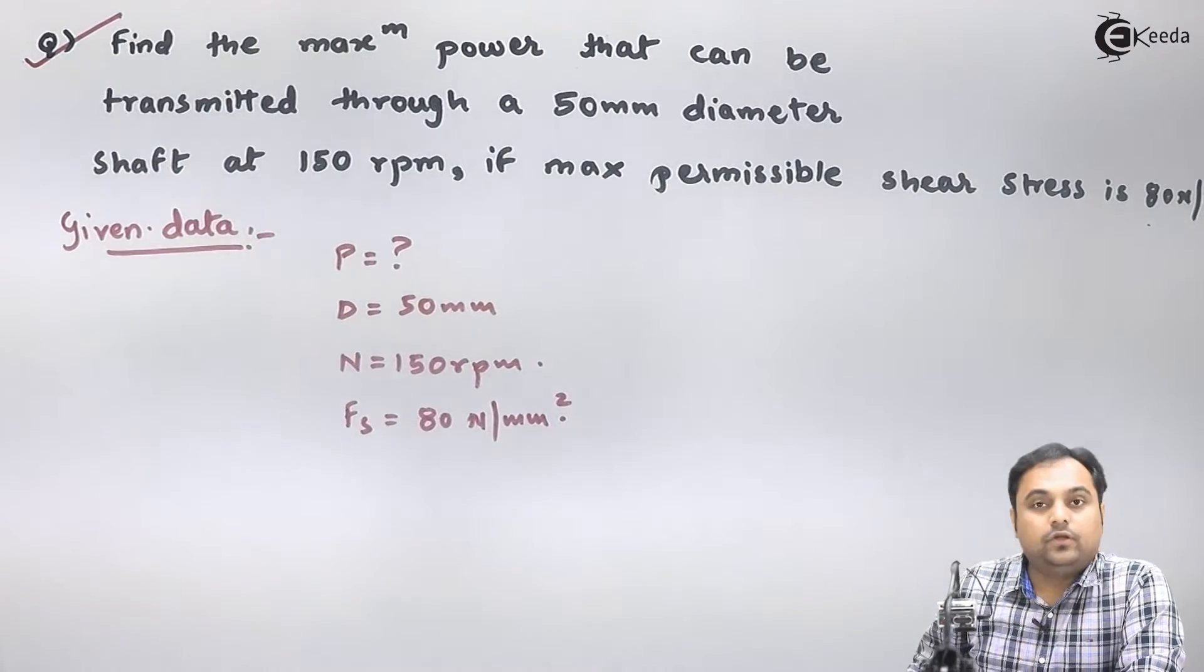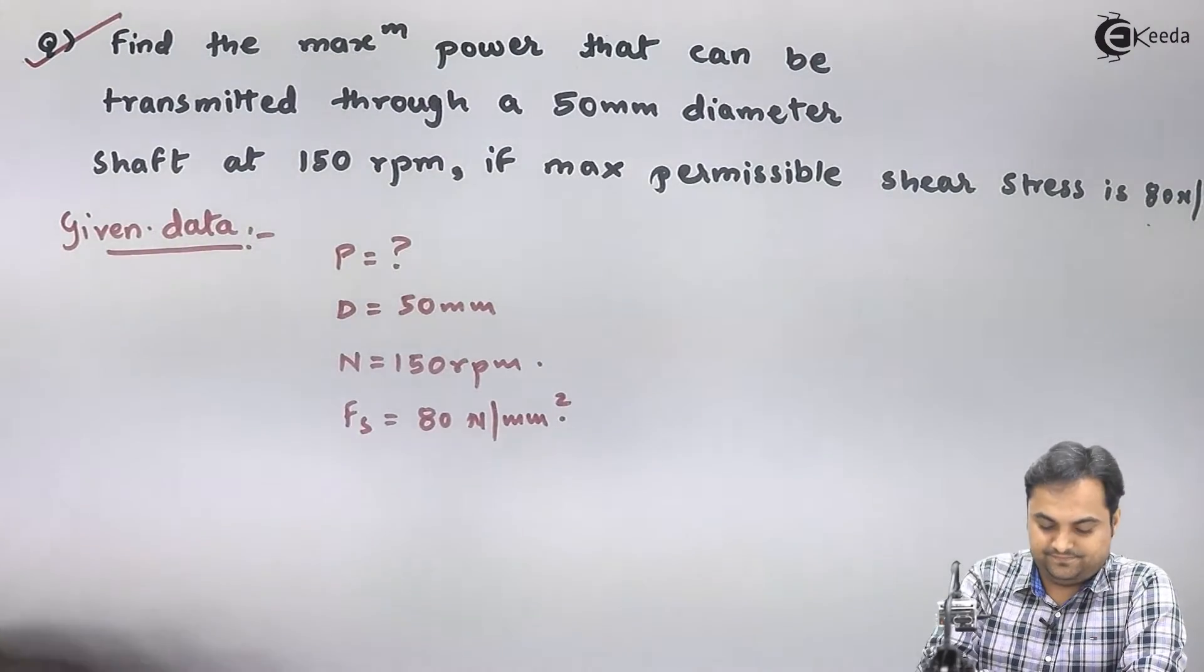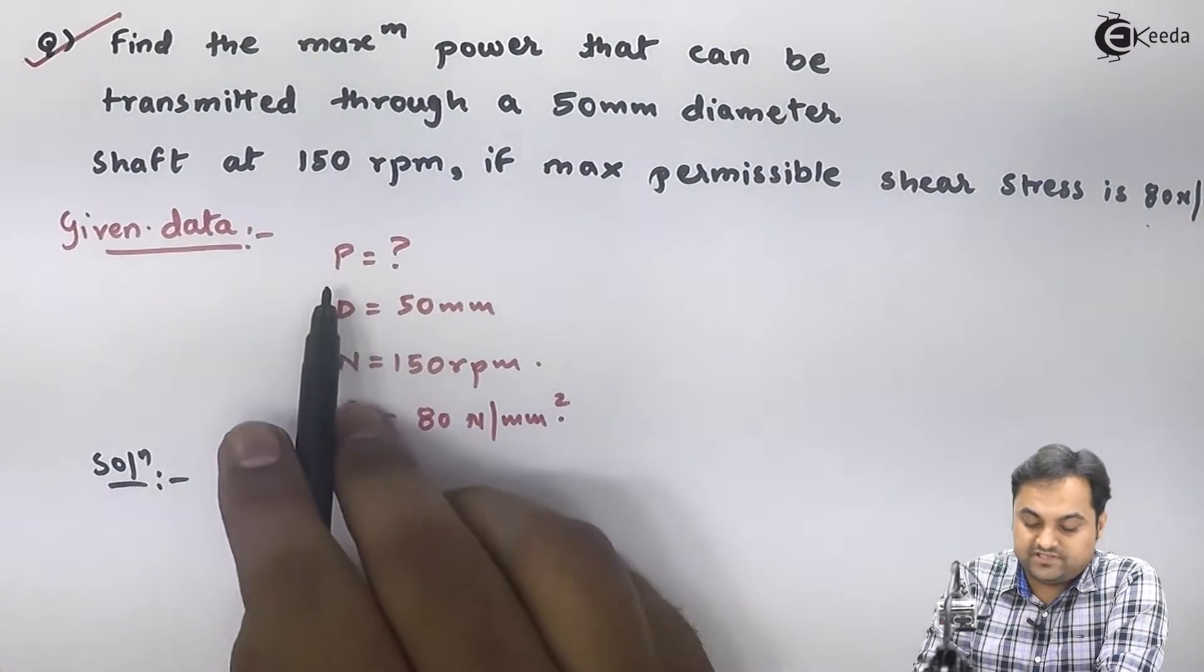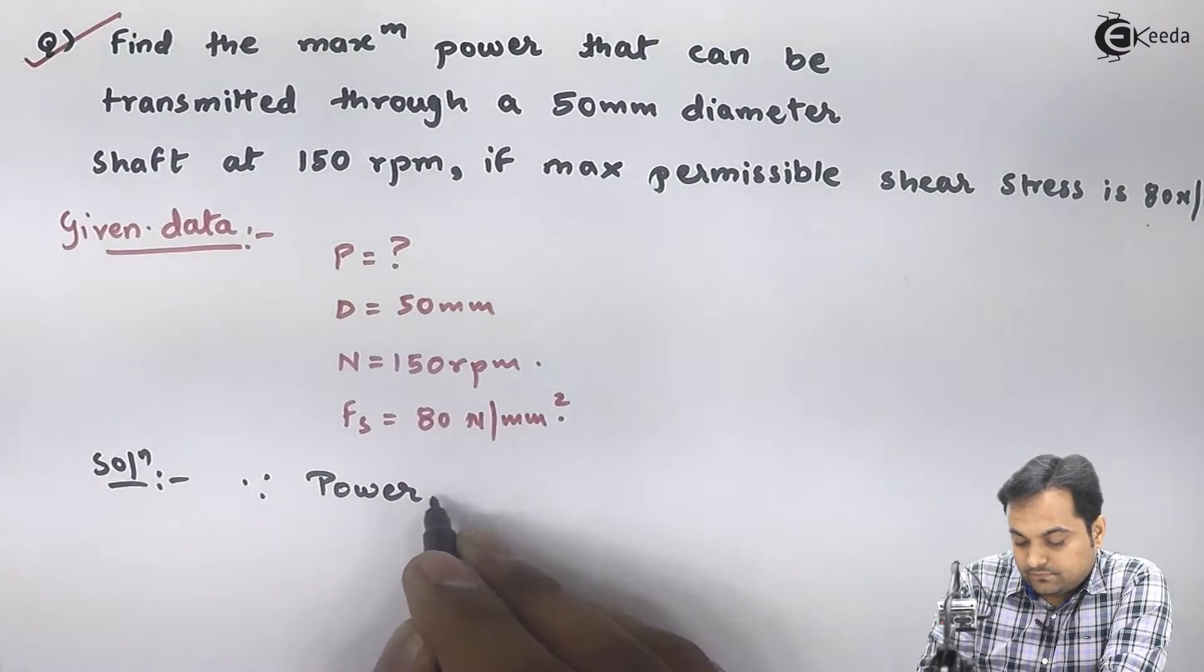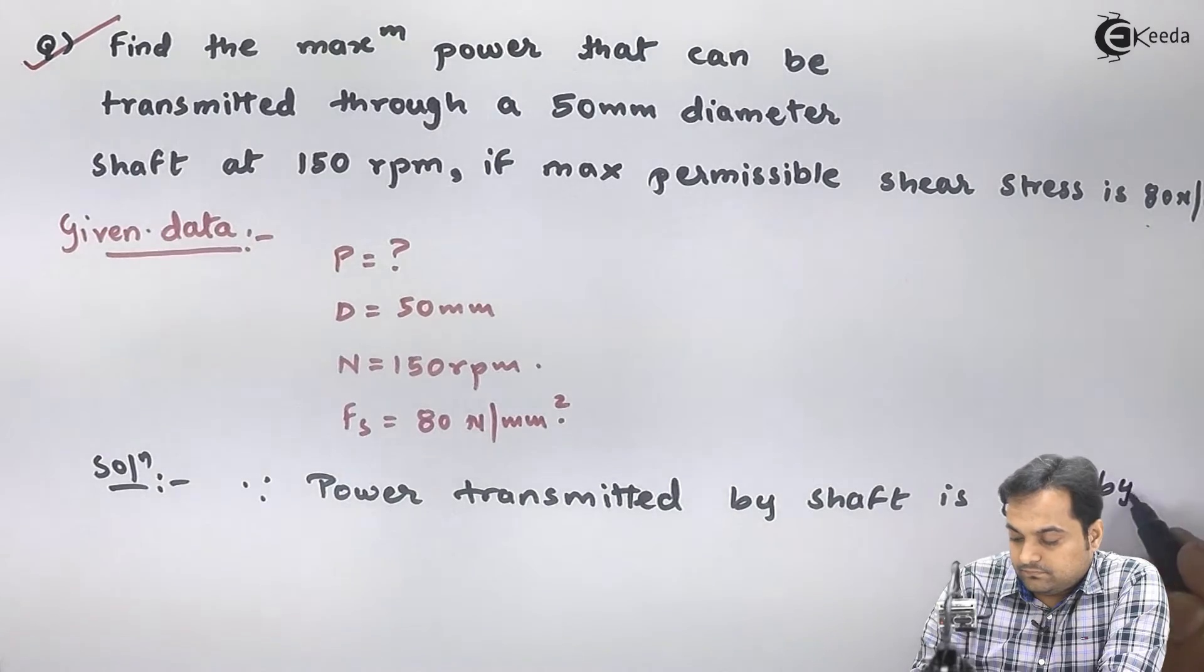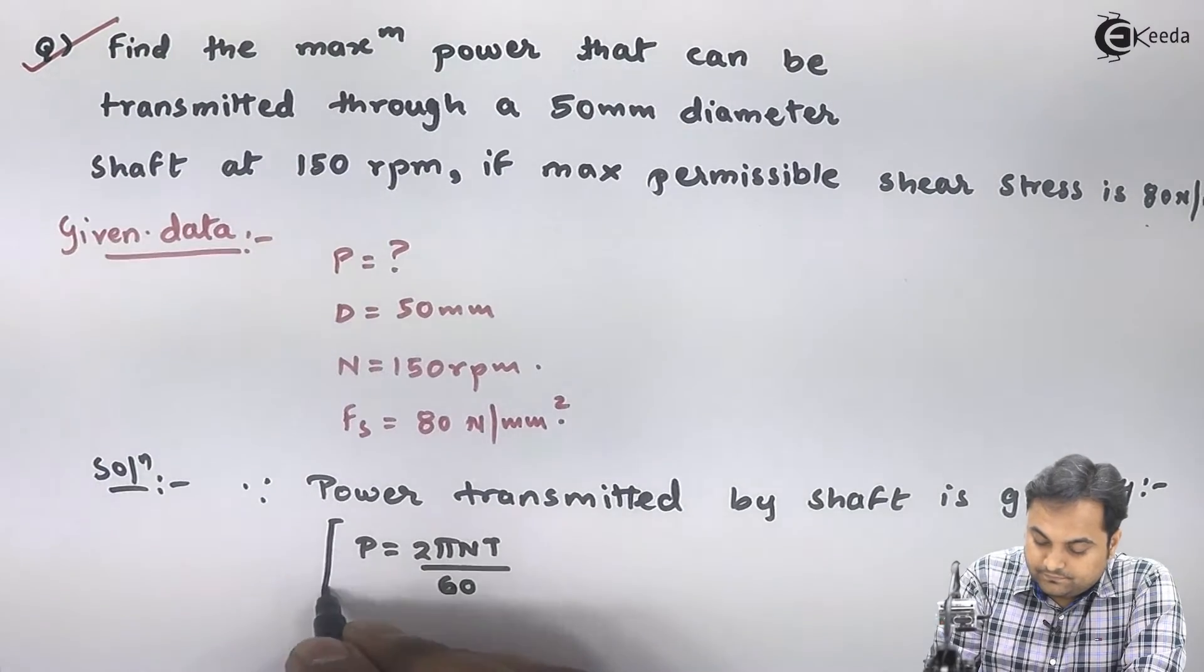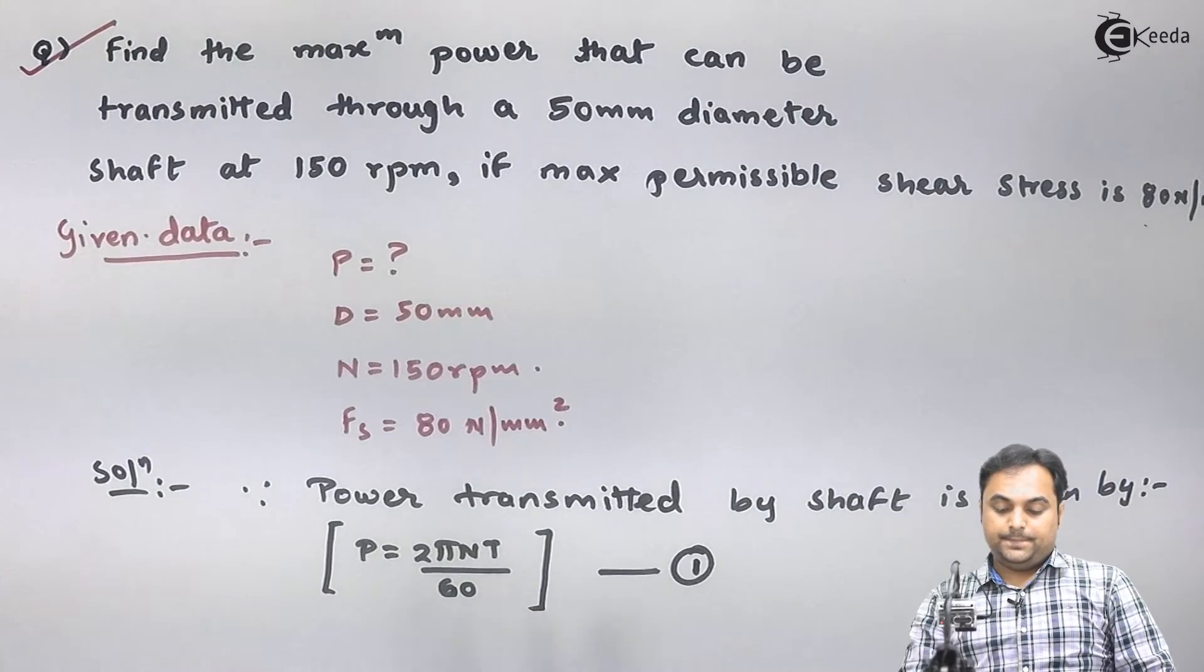This is the question and the data we have written. Let us start with the solution. Since power is asked, I will write the equation of power. Power transmitted by shaft is given by P = 2πNT/60. I will keep this as equation number one.